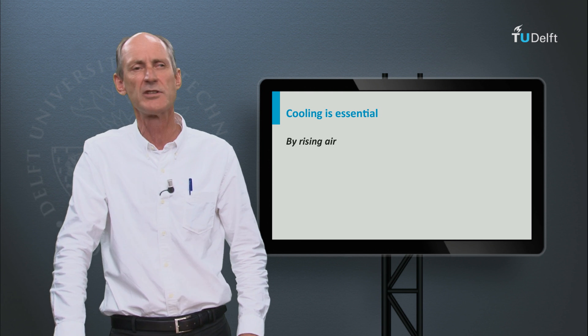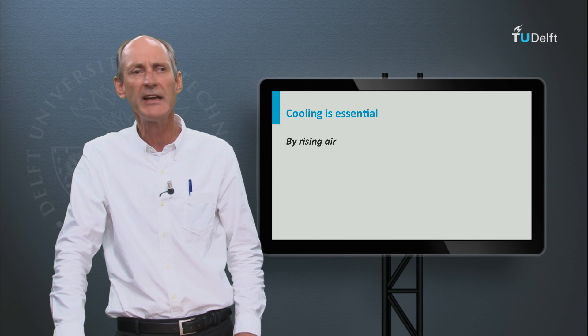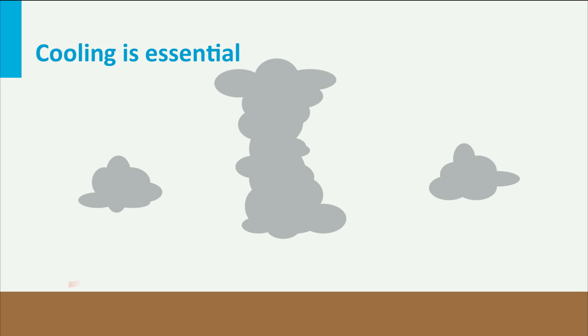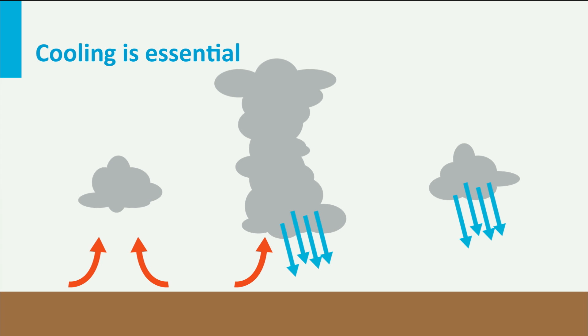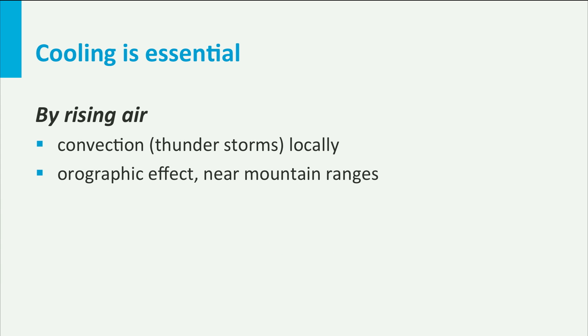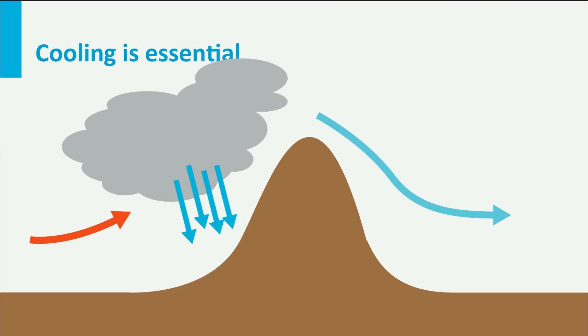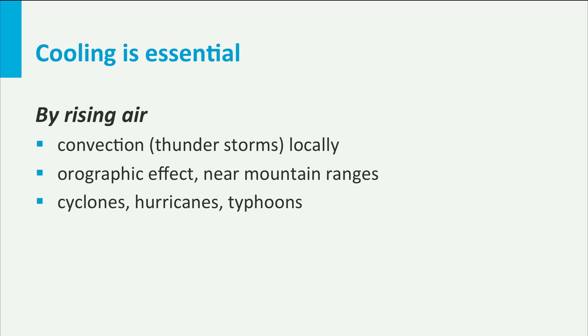What can be the causes of rising air? There can be several, and all of them have different characteristics. There is convection by thunderstorms, orographic effects near mountain ranges, and then we have tropical cyclones, hurricanes or typhoons.